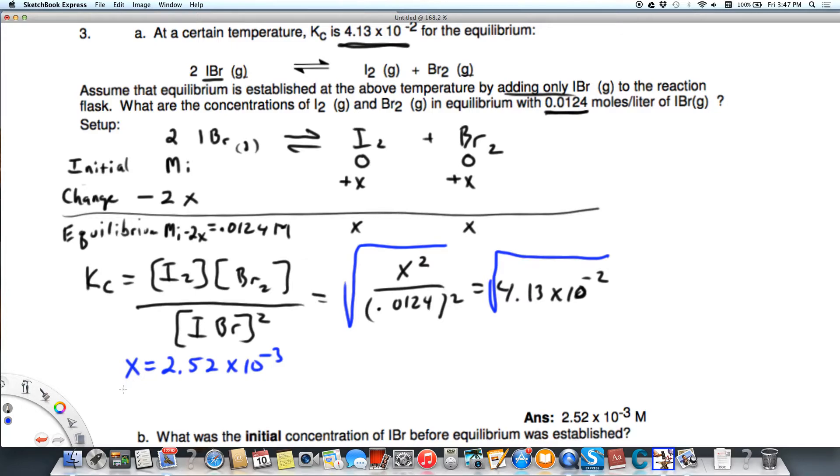That means that the concentration of I2 equals the concentration of Br2. We don't want to just say x. We want to actually answer the question. And it turns out that x is I2 and Br2, but we're going to state that 2.52 times 10 to the minus 3rd molar. And that's the answer to the question.